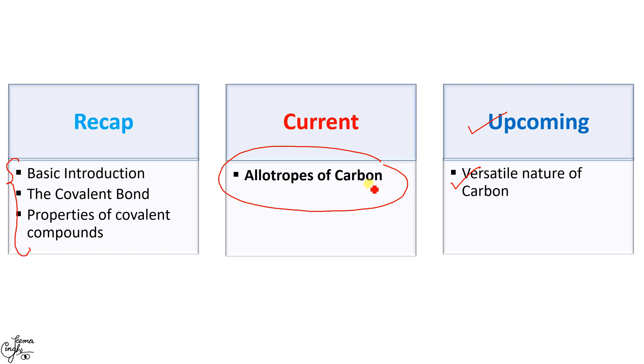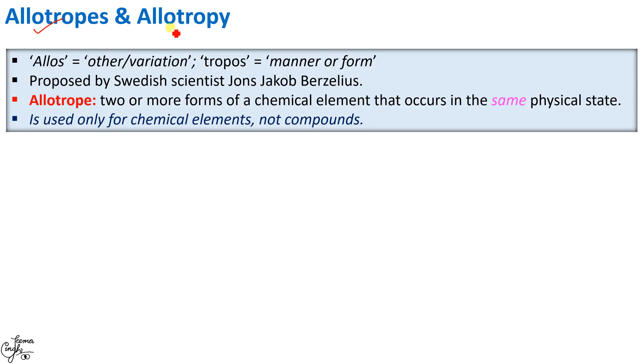Before we learn about the Allotropes of Carbon, it is necessary that we understand what exactly do we mean by the words Allotropes and Allotropy. The term Allotrope is derived from two Greek words: Allos which means other or variation, and Tropos which means manner or form. In simple terms, we can say Allotropes are different variations or different forms of the same element. Allotrope refers to two or more forms of a chemical element that occurs in the same physical state, i.e. solid, liquid or gaseous state.